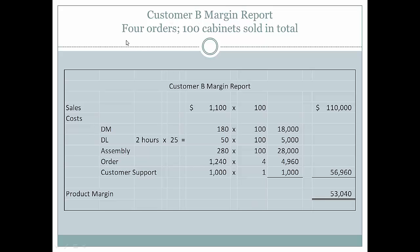Now let's look at customer B's margin report. They've placed four orders, and in total they've bought 100 cabinets throughout the year. The sales price per cabinet is the same $1,100 for 100 cabinets. Direct materials and direct labor are calculated for 100 cabinets. Assembly is $280 times 100 cabinets. Now the order processing cost is multiplied by four individual orders. Customer support is still $1,000 for this one customer. The customer margin for customer B is $53,040.